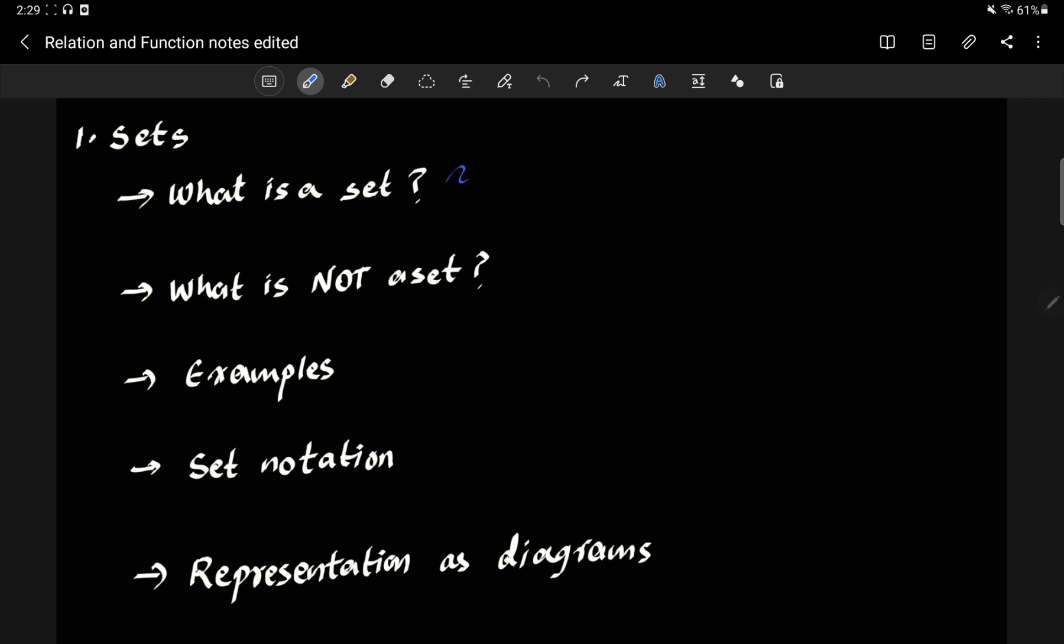And we're going to go by very simple definitions here. A set is called a well-defined collection of objects. And when we say collection of objects, it's basically what you think it would be. So you put a bunch of things together, you can form a set. The only important part of the definition here is the well-defined. Well-defined has a very specific definition. So it's kind of meta that well-defined has a definition in mathematics, which is very important.